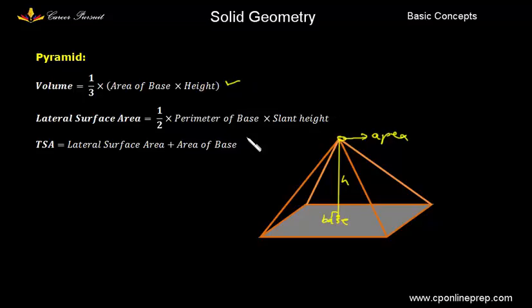We will be applying this formula in cone. Now lateral surface area is half into perimeter of base into slant height. Now what is this slant height? Slant height is the height of the lateral faces.